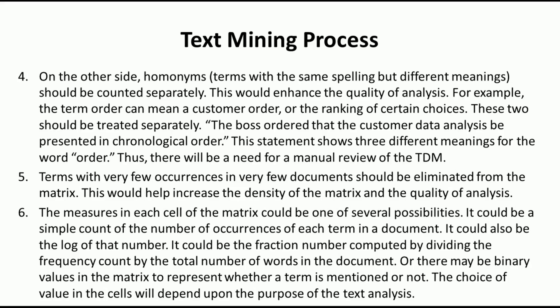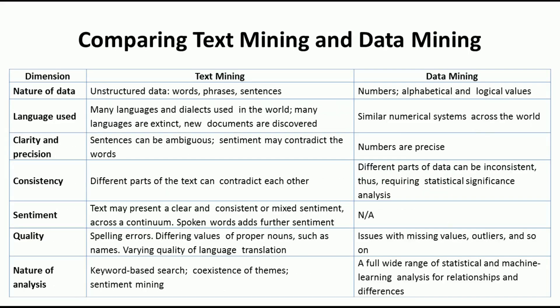Once you create the term document matrix, you can use different text data mining techniques on top of this structured data to extract knowledge or insights from the textual data. Next, we compare text mining with data mining. When it comes to the nature of data, in text mining the data is unstructured — we use words, phrases, or sentences. In data mining, we have numbers, alphabets, or logical values, so data mining uses structured data. The unstructured text data must be converted into structured data before applying data mining techniques.